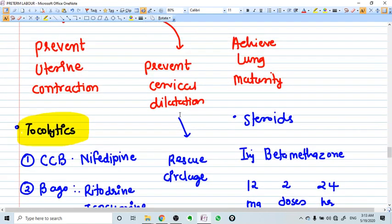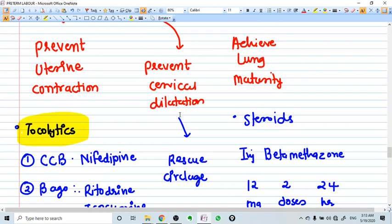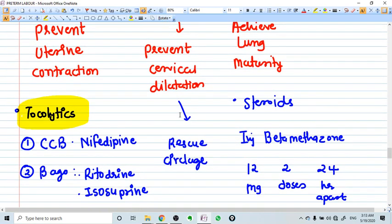Ritodrine drip can be used. But I am telling you, tocolytics can only be used if the preterm labor is less than 34 weeks. After 34 weeks, you don't need to use tocolytics. Rescue cervical encirclage can be done but not preferred after 34 weeks.